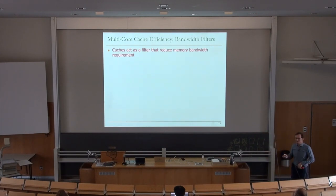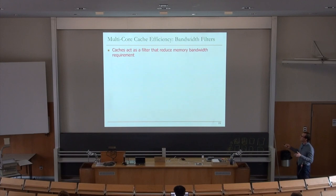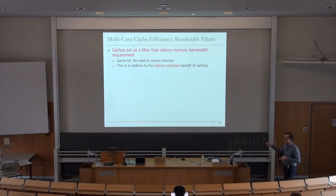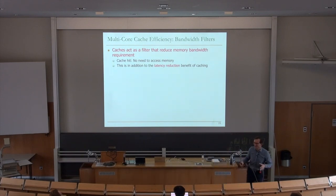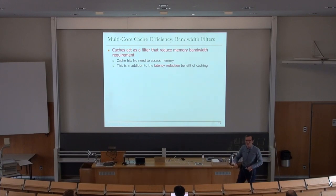In multi-core, cache efficiency becomes even more important. L1 caches are bandwidth filters — they reduce memory bandwidth requirements. When you get a cache hit there's no need to access memory, so contention reduces. This is important for bandwidth-constrained systems. This is actually why NVIDIA added caches to GPUs: even modest cache effectiveness reduces memory bandwidth demand significantly.